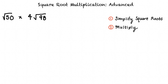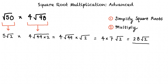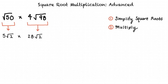The square root of 50 simplifies to 5 times the square root of 2. And 4 times the square root of 98 simplifies to 28 times the square root of 2. Next, we multiply these two expressions together and simplify. 5 times the square root of 2 times 28 times the square root of 2 can be rewritten as 5 times 28 times the square root of 2 times the square root of 2.